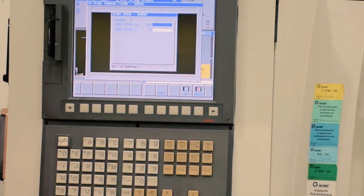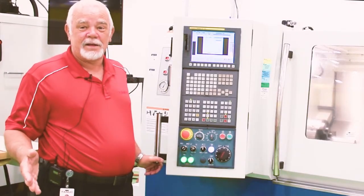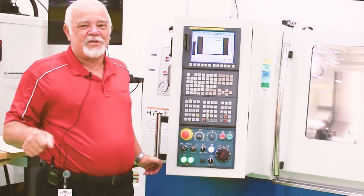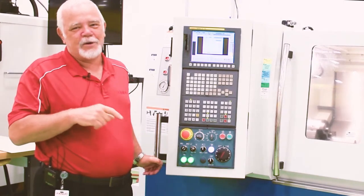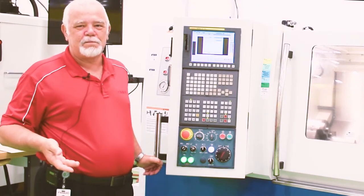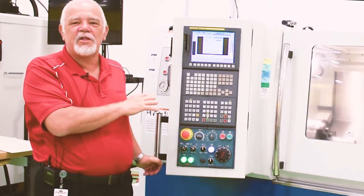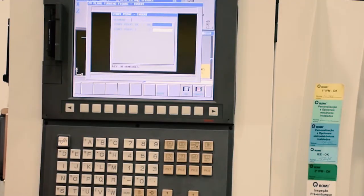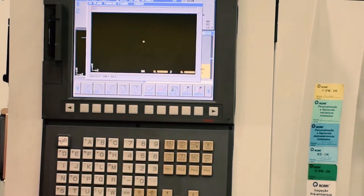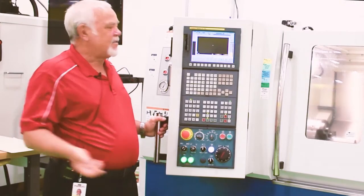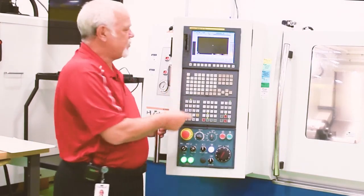Then it comes up and asks for the geometry of what we're going to turn. Okay. All we have to do is define the finish profile. You don't have to worry about approach moves. The control will do all that figuring for you. So we're going to start at zero and zero. Then say okay. Then this is just like a CAD system. You can start drawing what you want to do.